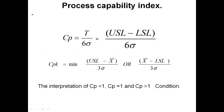Process capability measurement methods include: frequency distribution method, control chart method, and normal probability method. The process capability index Cp is calculated as: Cp = (USL − LSL) / 6 sigma, where USL is the upper specified limit and LSL is the lower specified limit. The Cpk index is the minimum of (USL − X-bar) / 3 sigma or (X-bar − LSL) / 3 sigma. It is recommended that Cp should be greater than 1.